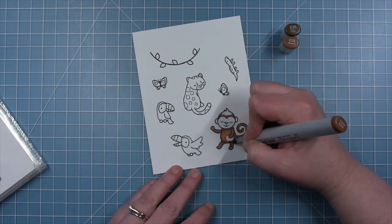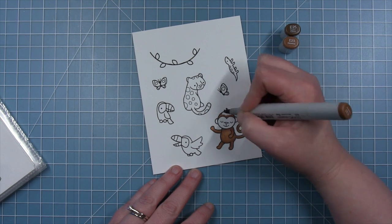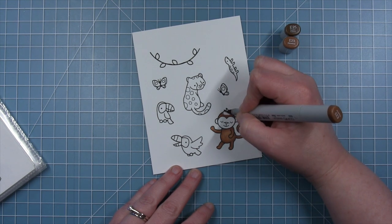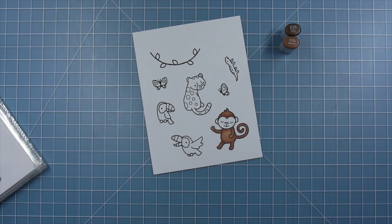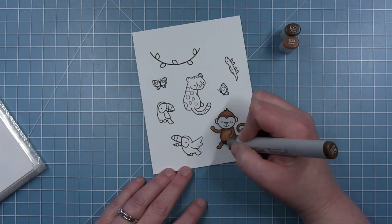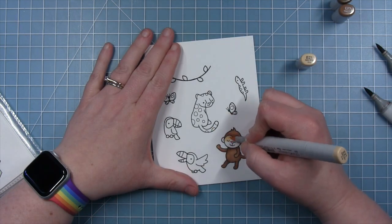I'm using some E25 for the shadows and then I'm blending out with my E23. And then I'm just coming back with that dark color again and adding a little more shadow.